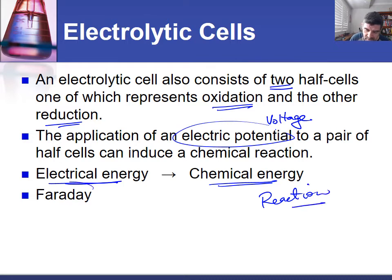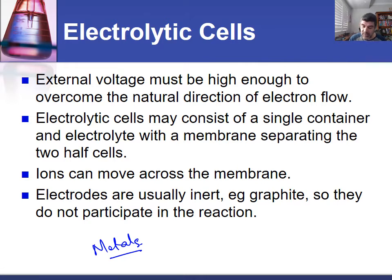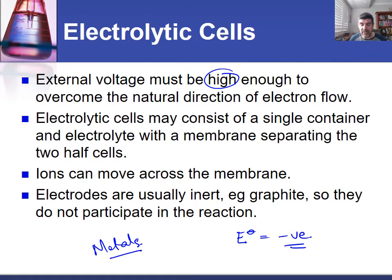This process was first described and used successfully by Michael Faraday. It is very useful for the production of metals from ores, particularly those that are quite reactive. For an electrolytic cell to work, the external voltage must be sufficiently high enough to overcome the natural direction of electron flow. The reason the electrolytic cell works is because the reaction is not spontaneous — the E-cell value is negative, meaning the reaction will not proceed on its own. Therefore we need to put energy into the system to get the chemicals to react with one another.